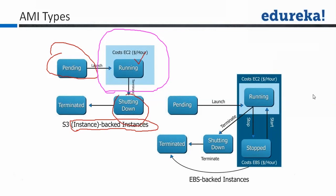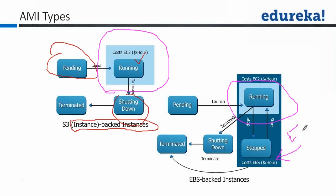In the EBS-backed AMI there is a difference: the instance can be stopped as well — stopped meaning a hibernate-like mode. When you stop the instance it will not cost you the running cost; the running cost applies only for the time the instance is actually running. When you stop it, Amazon will not charge you for running. However, there is an additional cost which is the EBS storage cost, which is very minimal.